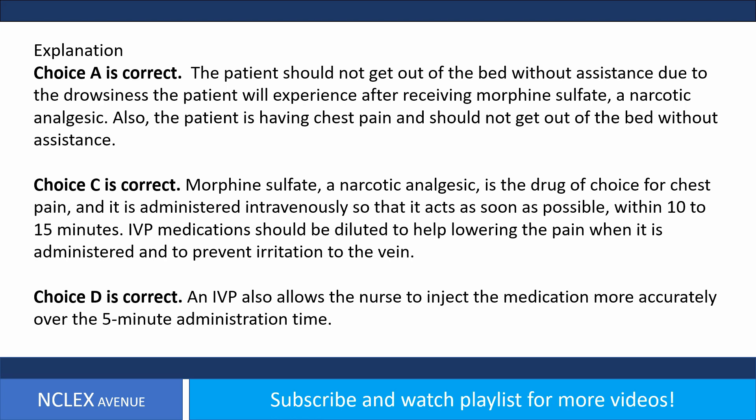Answer. A, C, and D. Choice A is correct. The patient should not get out of bed without assistance due to the drowsiness the patient will experience after receiving morphine sulfate, a narcotic analgesic. Also, the patient is having chest pain and should not get out of bed without assistance. Choice C is correct. Morphine sulfate, a narcotic analgesic, is the drug of choice for chest pain and is administered intravenously so that it acts as soon as possible within 10 to 15 minutes. IV medications should be diluted to help lower the pain when administered and to prevent irritation to the vein. Choice D is correct. An IV also allows the nurse to inject the medication more accurately over the 5-minute administration time.